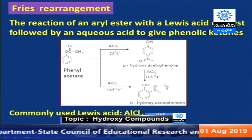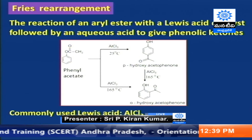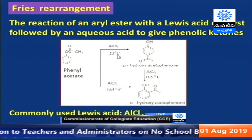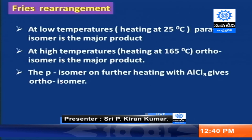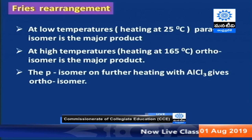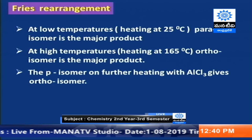We obtain two types of products: the ortho isomer and the para isomer. When phenyl ester is reacted with AlCl3 catalyst, at low temperature we obtain the para-hydroxyacetophenone, and at high temperatures we obtain the ortho-hydroxyacetophenone. Interestingly, the para isomer on heating with aluminum chloride undergoes transformation to the ortho isomer.